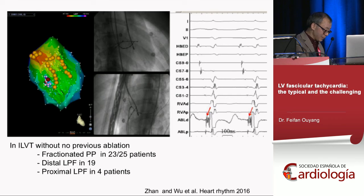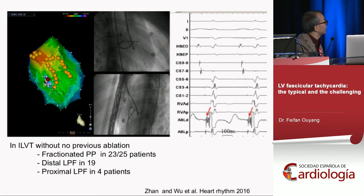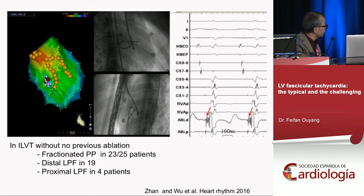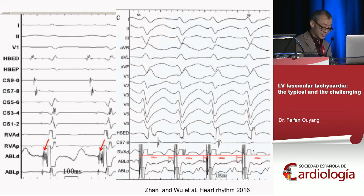More interestingly, we studied whether we could identify slow conduction in 25 patients with anterior fascicular VT — all without prior ablation. In 23 of 25 patients, close to the posterior fascicular area, we found a fragmented potential area during sinus rhythm. Locations: distal in 19 patients, some anterior, 4 patients in another area. During induced VT, we again found the fragmented potential area with P1 and P2 components. After ablating that area, VT was no longer inducible in most patients.